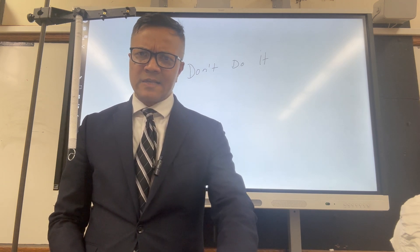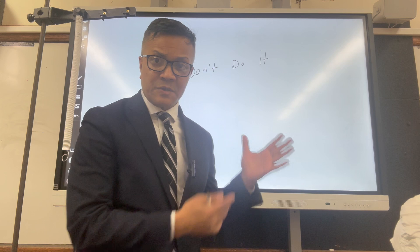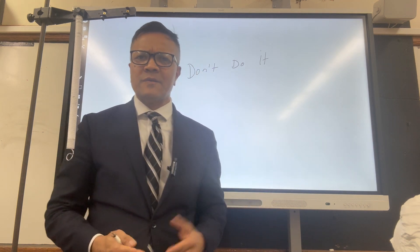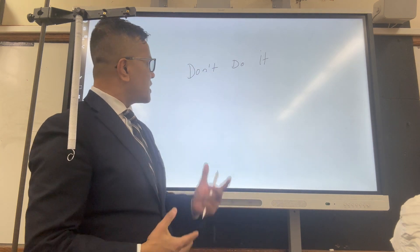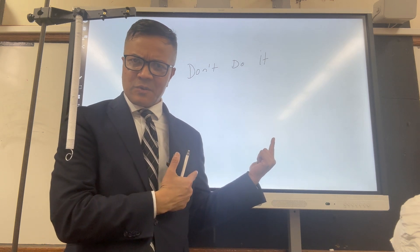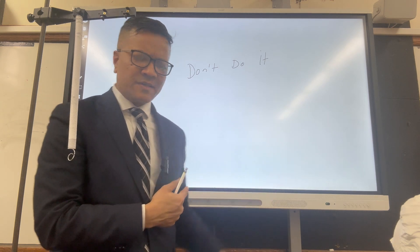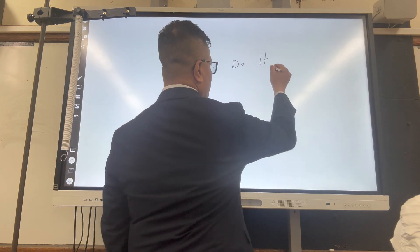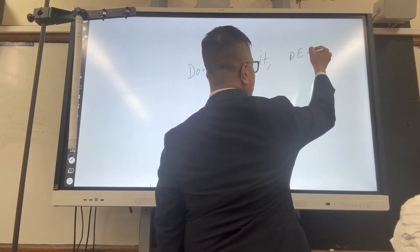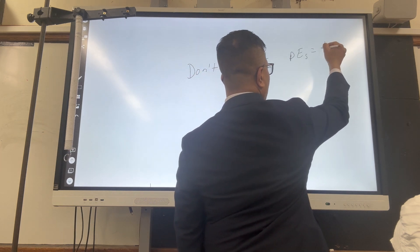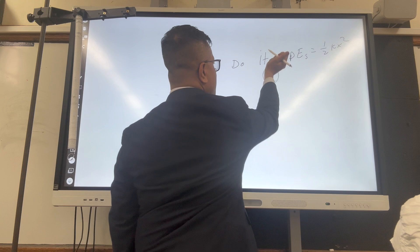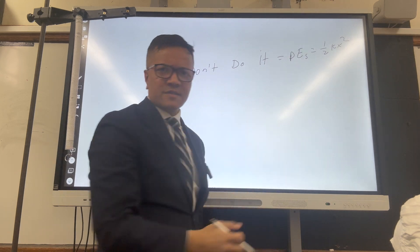Math is the language of the universe. The spring uses math instead of telling you don't do it. So can you convert this to a math equation? Yes, of course. You should be able to convert this to a math equation. P is equal to half K x squared. This is the equivalent statement.